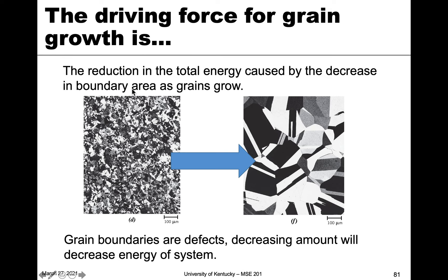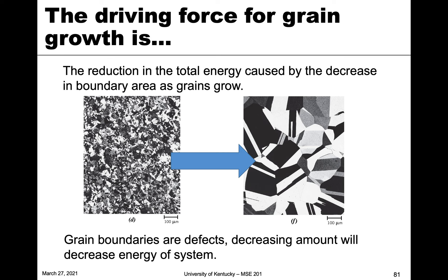The driving force for grain growth is the reduction in the total energy caused by the decrease in boundary area as those grains grow. You go from a structure with a lot of grain boundaries between all these small grains, to one with fewer grain boundaries between much larger areas. Grain boundaries are defects, so decreasing their amount decreases the energy of the system. If left unchecked at elevated temperature after recrystallization, grains will always tend to grow.